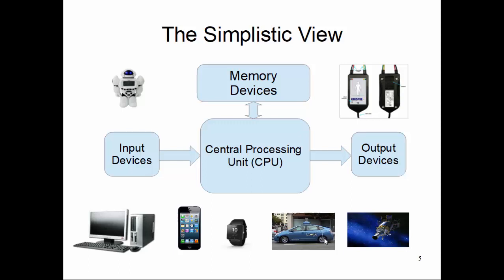All computing systems have these associations: they have certain input devices through which they take in information to be processed, they process it in the central processing unit, and the result goes to the output device. The system also associates itself with a memory device to store intermediate results and important information, which can be stored and retrieved as needed. So we can have a very simplistic view of a computing system comprised of input devices, output devices, central processing unit, and memory device.